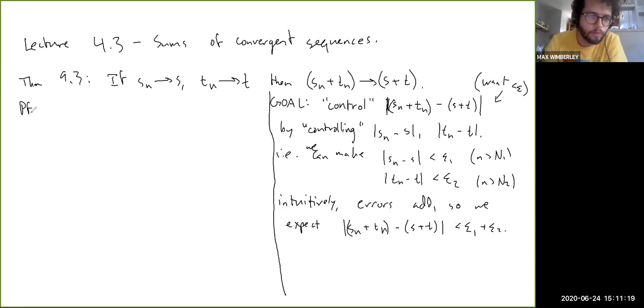So proof. Let epsilon be greater than zero. Then, I don't even have to use the notation of epsilon 1 and epsilon 2. To get epsilon 1 plus epsilon 2 to be less than or equal to epsilon, you can just make them both be epsilon over 2.